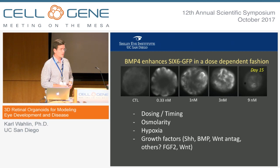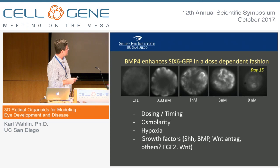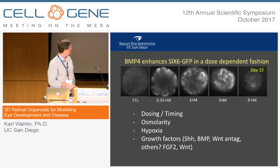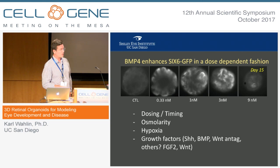BMP4 is also very important in eye development — basically involved in everything. We tested a dose response and found that lower doses are much more favorable for generating SIX6-positive vesicles than higher doses. In fact, higher doses actually give rise to completely different tissues — in some cases beating cardiac cells and other unwanted tissues. So this system really allows us to test dosing and timing, osmolarity, hypoxia, and growth factors including hedgehog signaling, BMPs, and Wnt antagonists.